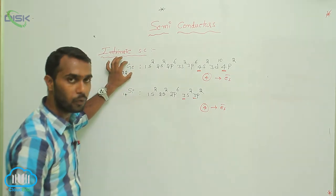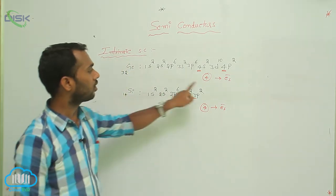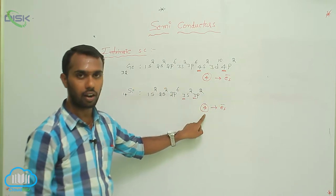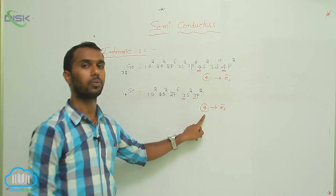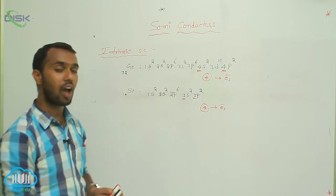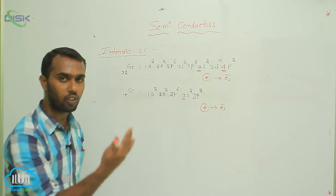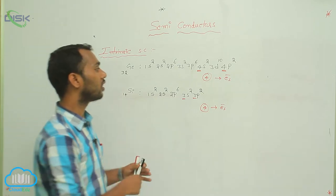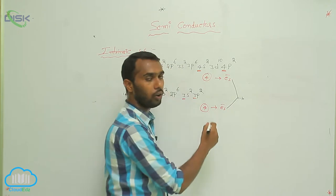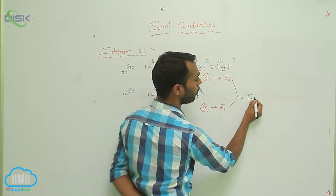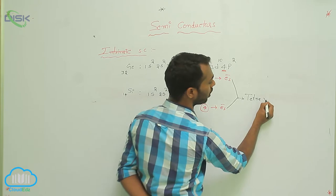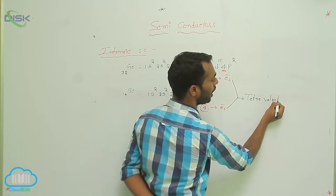For germanium, valency electrons = 4. For silicon, valency electrons = 4. Since germanium and silicon both have 4 valency electrons, they are called tetravalent elements — tetra means 4.